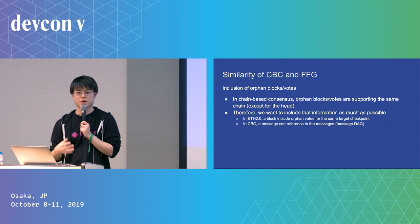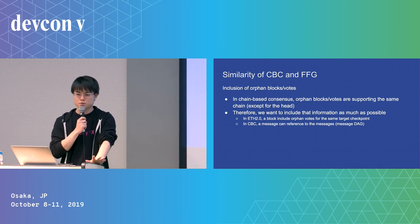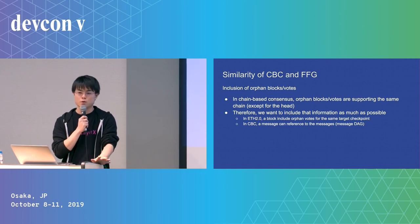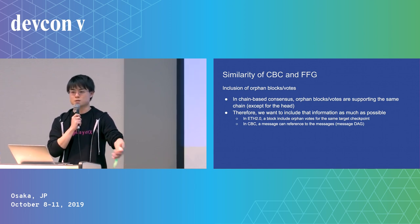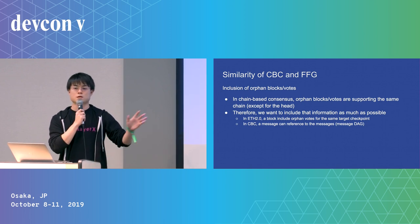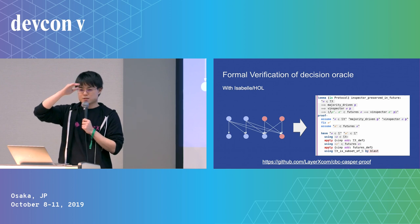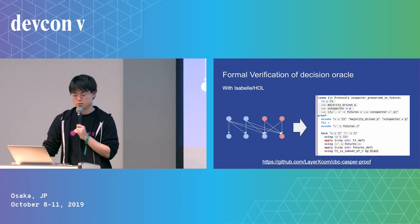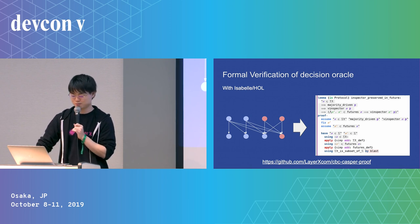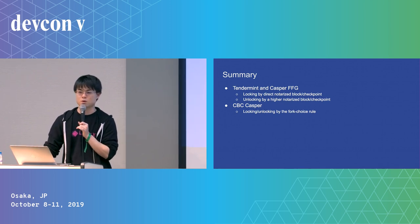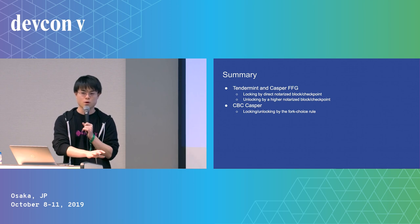The similarity between CBC and FFG is that both are chain-based: every vote or block supports the same ancestor. In FFG, orphan votes are included on-chain because they support the same checkpoints; CBC does the same more flexibly. The exact finality condition is not covered in this talk, but we recently finished formal verification in HL—it took more than half a year. Summary: Tendermint, Casper FFG, and CBC are all based on locking, differing in whether locking is based on a notarized checkpoint, block, or fork choice.